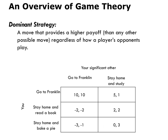This payoff matrix is a table that presents the payoffs for two players — you and your significant other. You have three different moves: you can go to Franklin Street, you can stay at home and read a book, or you can stay at home and bake a pie. Your significant other has two moves: they can go to Franklin, or stay at home and study. The numbers in the payoff matrix represent both players' payoffs. On the left of the comma we see your payoffs. For example, if you stay at home and read a book and your significant other stays at home and studies, your utility will be two utils. The numbers to the right of the commas represent your significant other's payoffs — for example, if you stay at home and bake a pie and they go to Franklin, their payoff will be minus one utils.